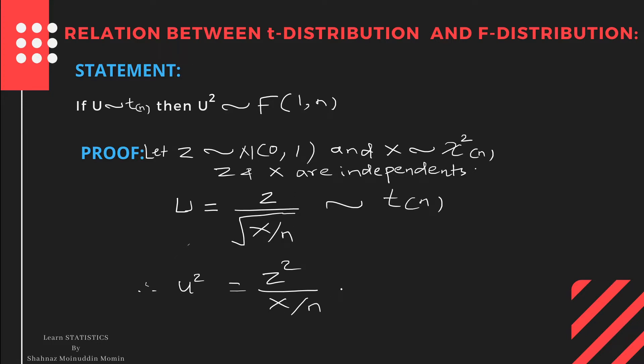We know that Z² is nothing but a chi-square with one degree of freedom. If we square this standard normal variate, then it follows a chi-square distribution with one degree of freedom. And X is chi-square with n degrees of freedom.